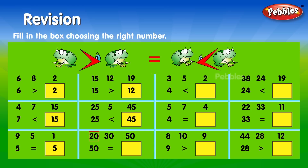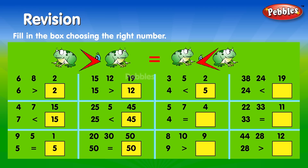20, 30, 50. 50 is equal to 50. 3, 5, 2. 4 is less than 5. 5, 7, 4. 4 is equal to 4.